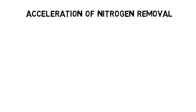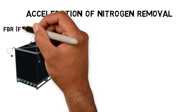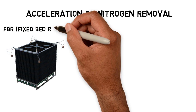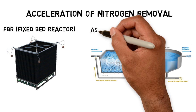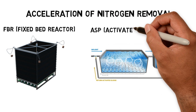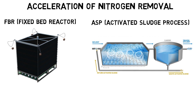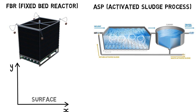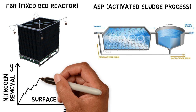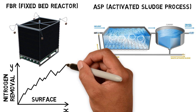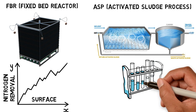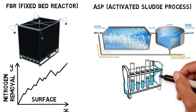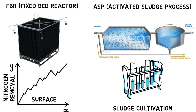Wastewater treatment plants accelerate nitrogen removal by using different technologies such as fixed bed reactors and activated sludge process. Fixed bed reactors increase the available surface area for biofilm bacteria growth, whereas activated sludge performs more nitrogen removal by sludge cultivation and additional oxygen input.